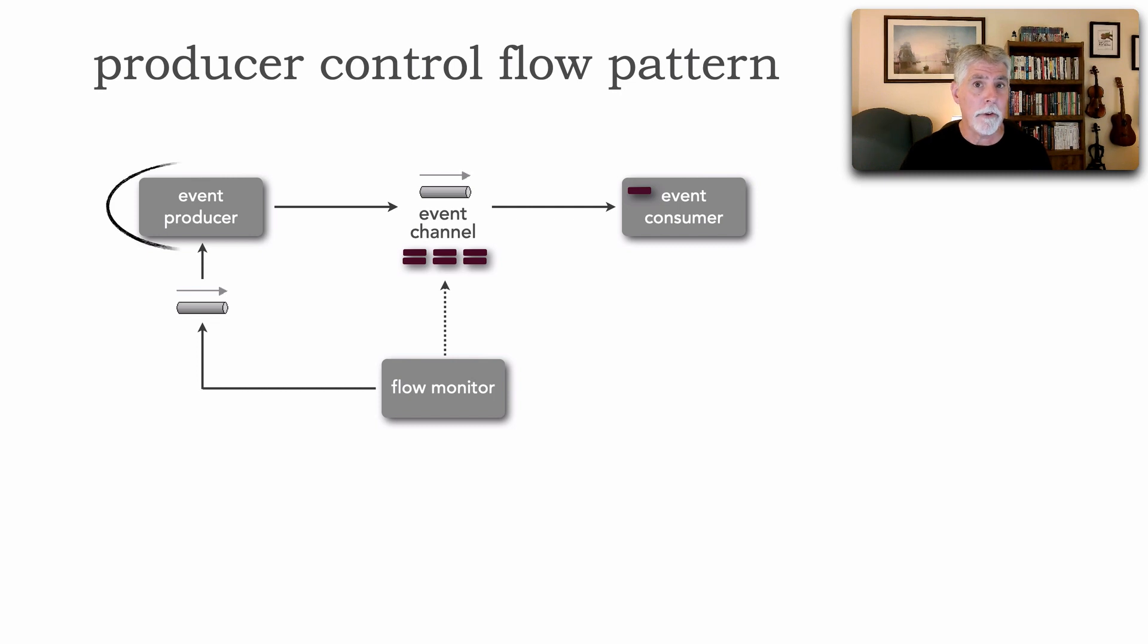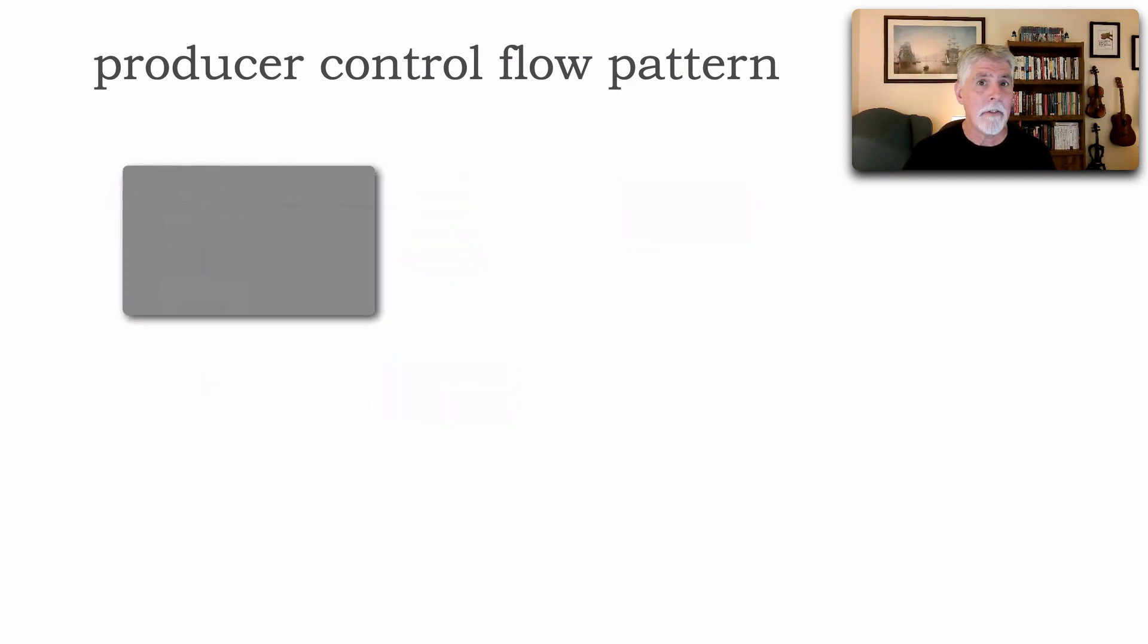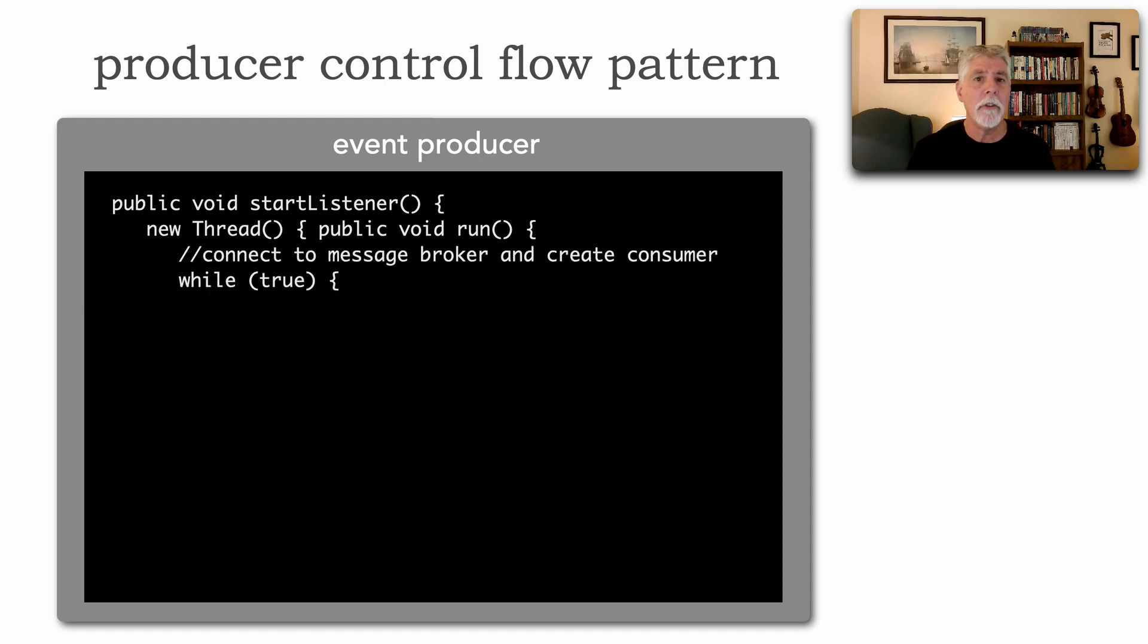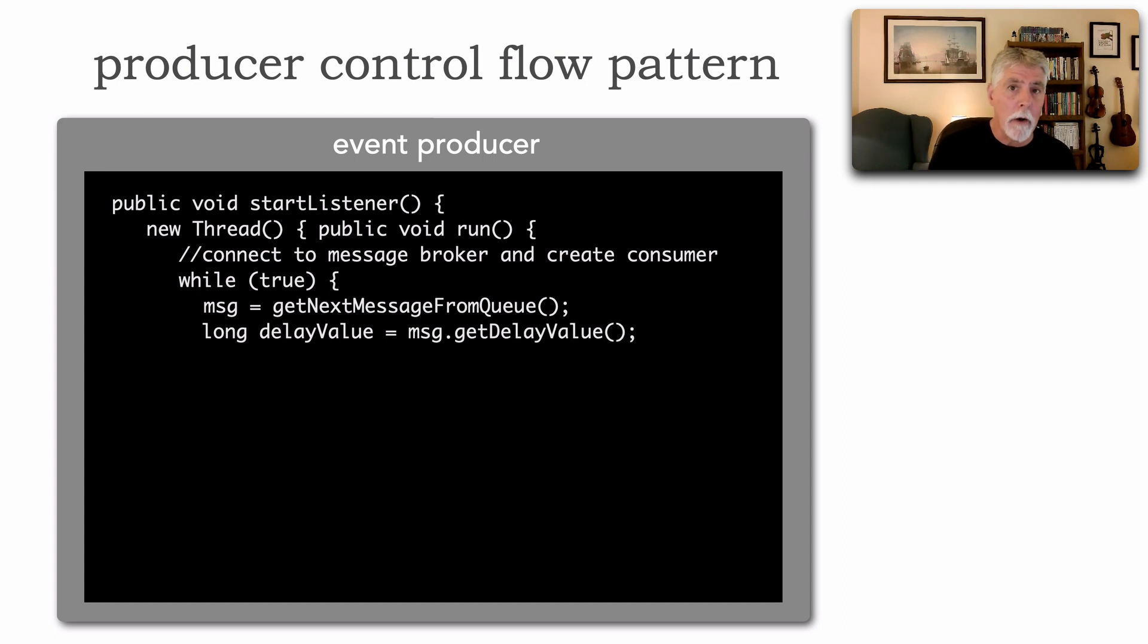Now each event producer also has to have some logic as well because I need to receive those messages to tell me when to slow down or not. So I'm going to create a thread, connect to that message broker, create a corresponding consumer. Now I'm just going to continue to listen on that control flow queue and I get the next message from the queue. Now once I do receive a message to slow down or speed up I grab that delay value off of that message. Remember it's either 3,000 or zero. And now I simply set my own delay flag to that value that is in that message and I just start this thread and continue to do this over and over.